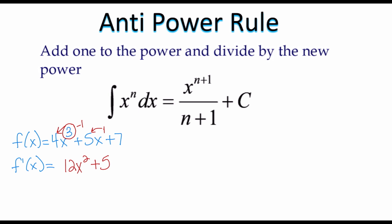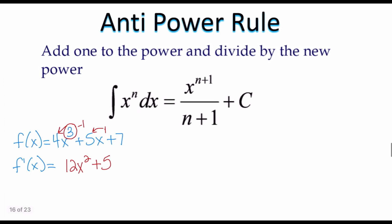What we're going to be doing now is going backwards. If I give you the derivative, I want you to come up with the original equation. That is called using the anti-power rule in integration. You'll notice we have this integral symbol, and I could ask you to find the antiderivative of 12x squared plus 5 dx. This is an integral — we're integrating — and the goal is to come back to that original equation.